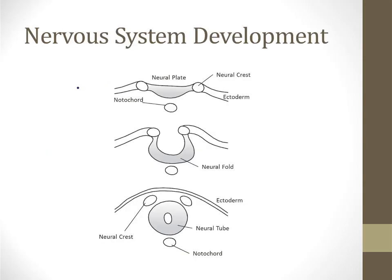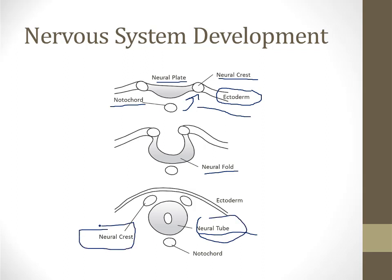Your nervous system derives from the ectoderm, and this process depends on a structure beneath the ectoderm called the notochord, which comes from the mesoderm. This mesodermal structure, the notochord, will influence via signals the ectoderm above it to transform into two little bumps called neural crests and a stretch called the neural plate between them. The notochord then further stimulates the neural plate to become the neural fold and finally the neural tube. The nervous system develops from an involution of that ectoderm.